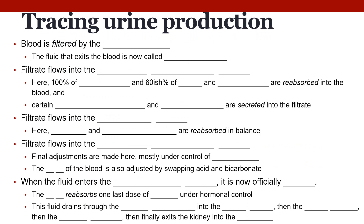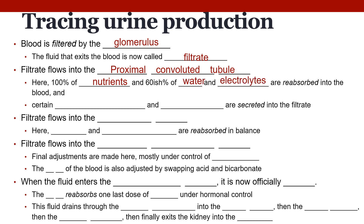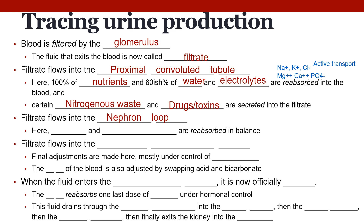In urine production, blood comes into the afferent arteriole and is filtered by the glomerulus; the fluid that exits is called filtrate. The filtrate flows into the proximal convoluted tubule, where 100% of the nutrients that made it into the filtrate, as well as 60% of the water and electrolytes, are reabsorbed back into the blood through active transport channels. Certain nitrogenous waste and drugs or toxins are secreted into the filtrate. The filtrate then flows into the nephron loop.